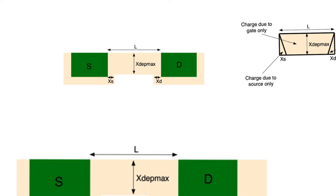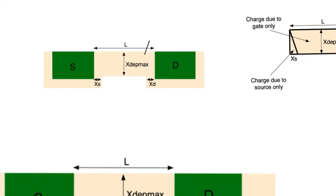To develop an analytical model, we have to understand drain-induced barrier lowering through the lens of charge-sharing. The charge-sharing model says that before a channel can be formed under the oxide, there first has to be a depletion region of a specific depth. That depth is called X_dep_max, and it is the depth at which we saturate in a body with uniform doping, or simply the depth of doping when we use steep retrograde doping. In any case, it is a constant number representing the maximum depth of the depletion region.